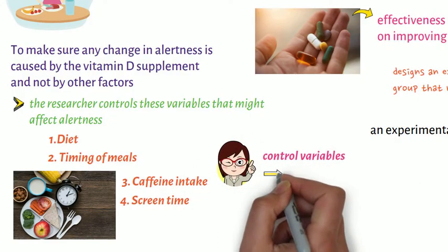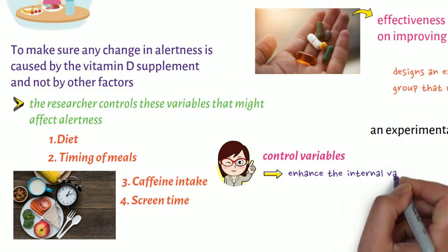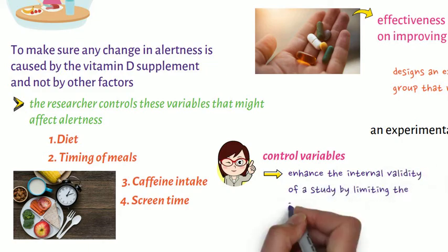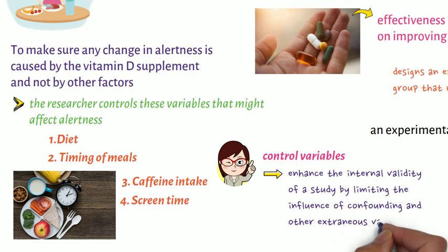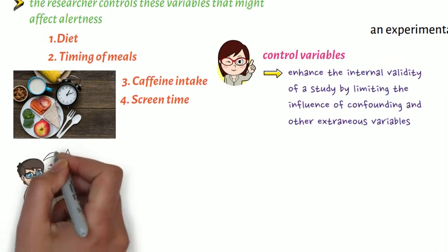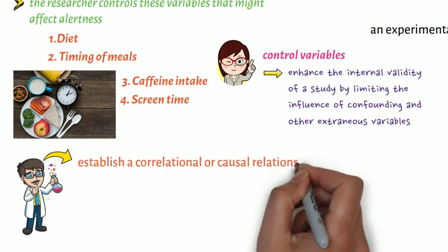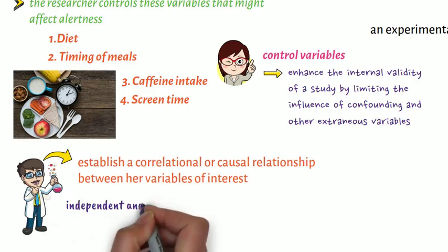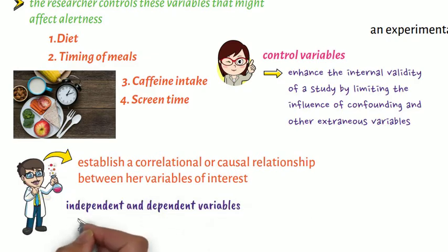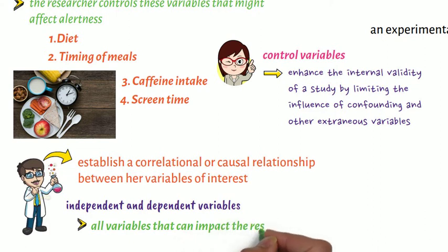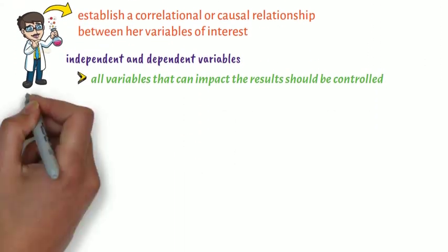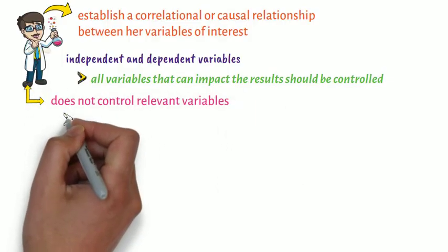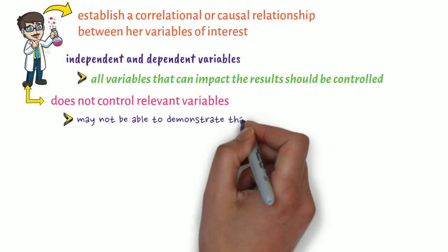As we can see, control variables enhance the internal validity of a study by limiting the influence of confounding and other extraneous variables. This helps the researcher establish a correlational or causal relationship between her variables of interest. Aside from the independent and dependent variables, all variables that can impact the results should be controlled. If the researcher does not control relevant variables, she may not be able to demonstrate that they didn't influence her results.